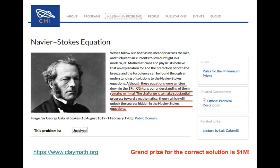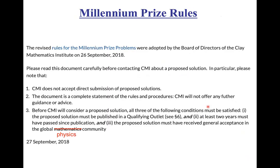This reassures us that as a community we are solving the correct equations, or at least trying to work on topical problems. As you probably know, there is a prize for these Millennium Problems, so feel free to give it a try. The rules require that you publicly publish your solution — at least two years must pass since publication, and the proposed solution must receive general acceptance in the global community.